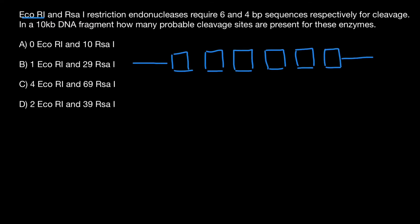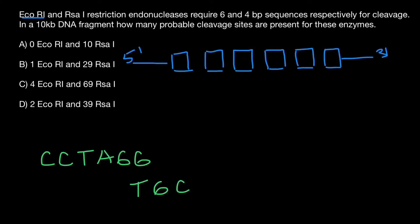The sequence is not given, but let's use a random example: C, C, T, A, G, G. We have four bases: thymine, guanine, cytosine, and adenine.